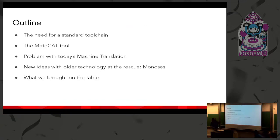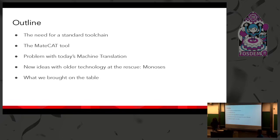Today the outline is as follows: we start with the need for a standard toolchain for translating and localizing software projects. Then I'll talk about the CAT tool I'm bringing today, which is MateCAT. Then what's the problem with today's machine translation — the most fundamental supporting system for a translation pipeline — what the solution is, and what we have here practically.